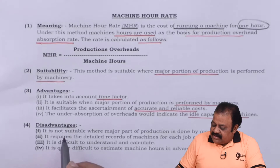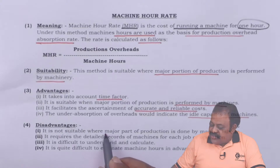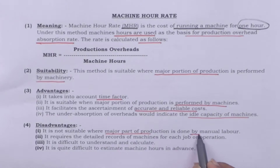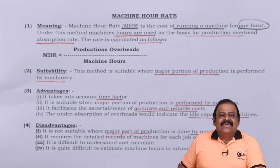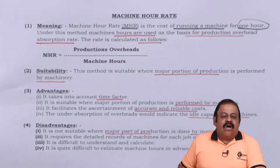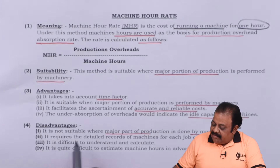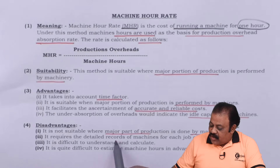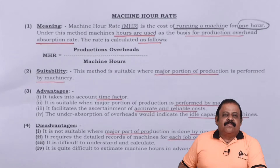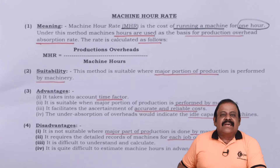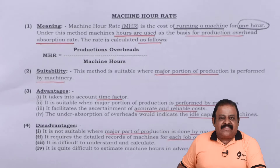Regarding disadvantages: it is not suitable where the major part of production is done by manual labor, or where there is lesser use of machineries in the production process — this method is not relevant there. It requires detailed records of machines for each job or operation. For that purpose, we need a proper system of collecting all information relating to cost based on source documents, requisition slips, etc.